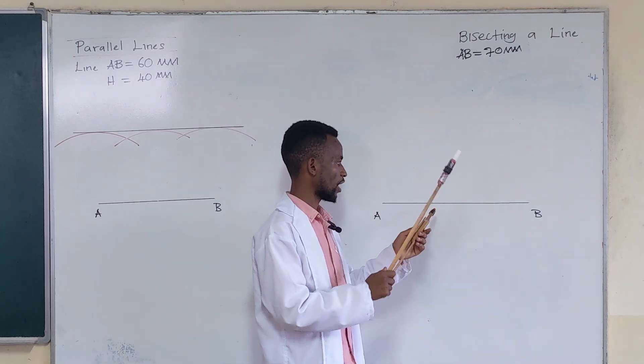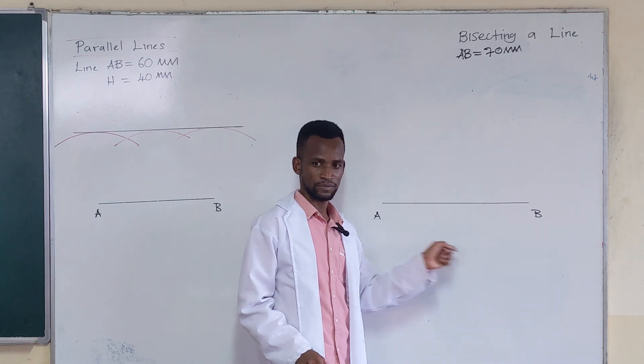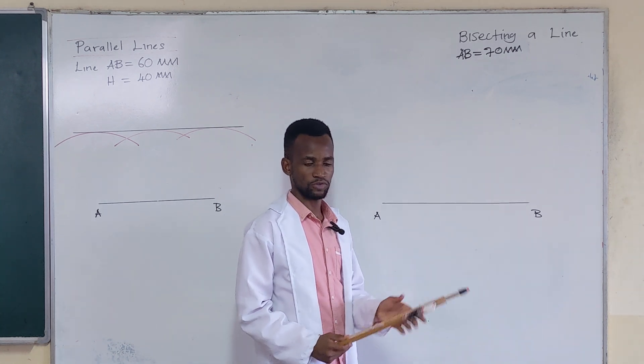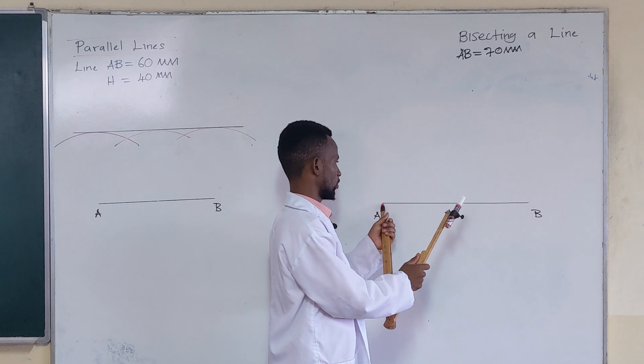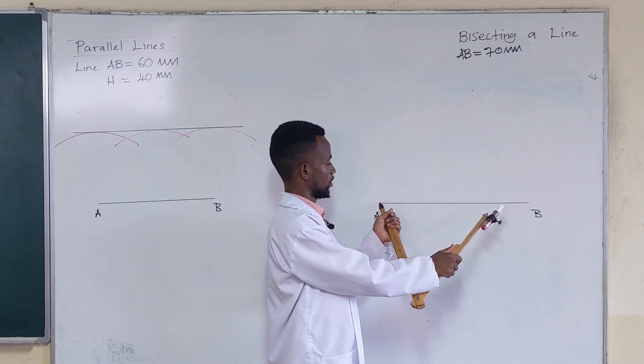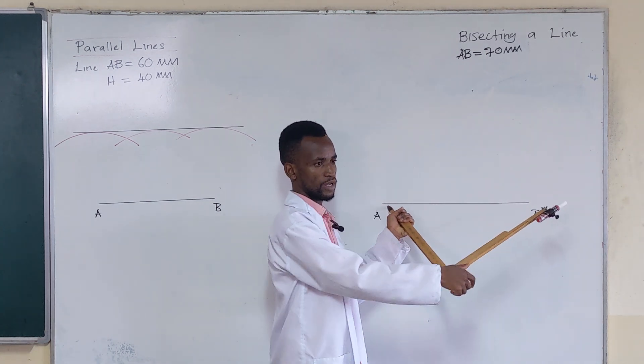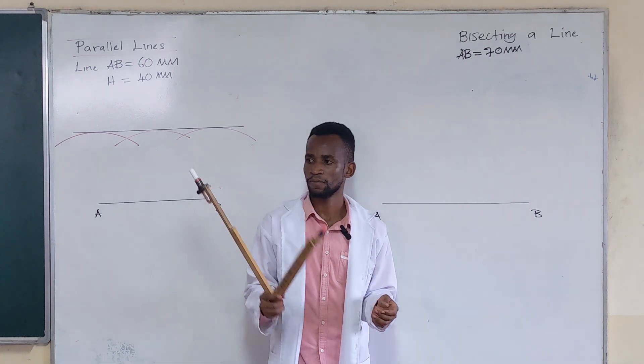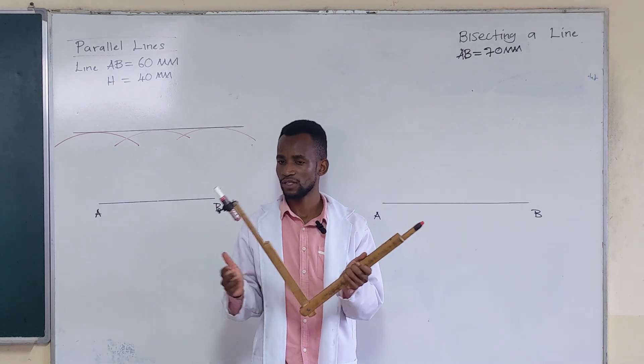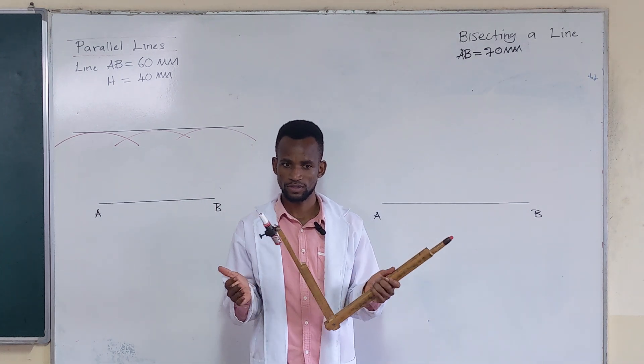You just open it—obviously half is located somewhere here, that's the midpoint. So as long as it's more than half, even that is more than half. But you need to pick a radius that is convenient for you so that it will be easier to construct the arcs.